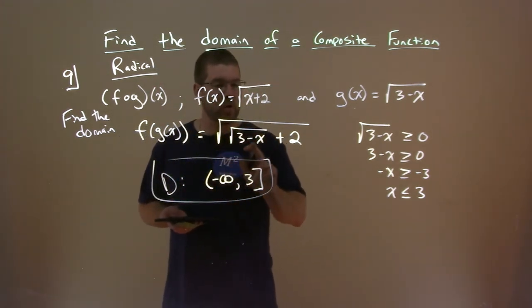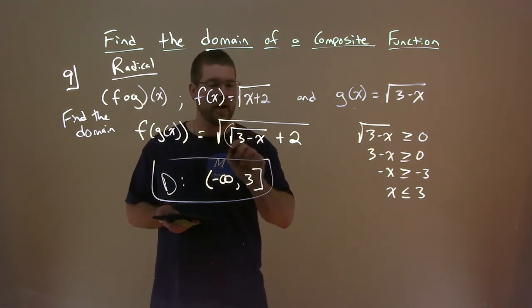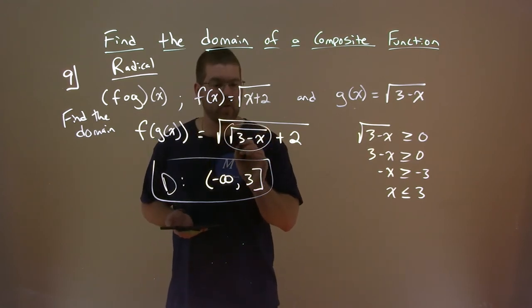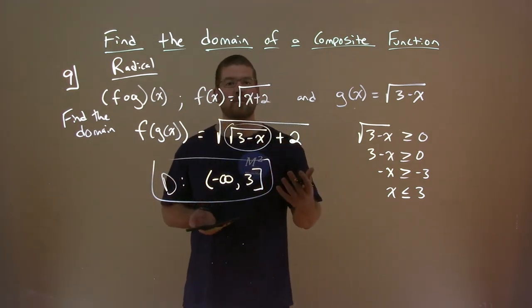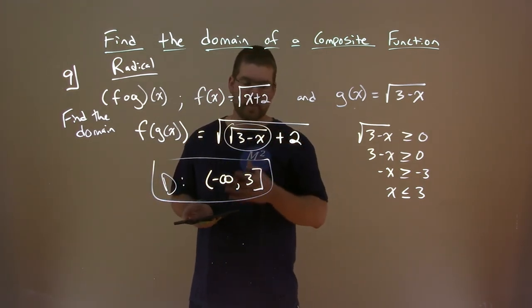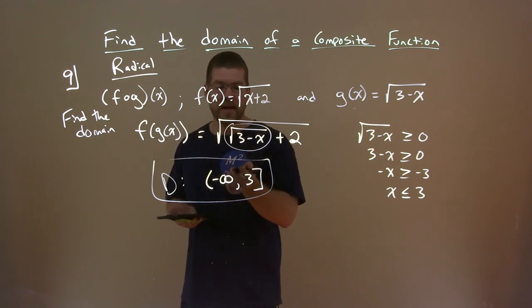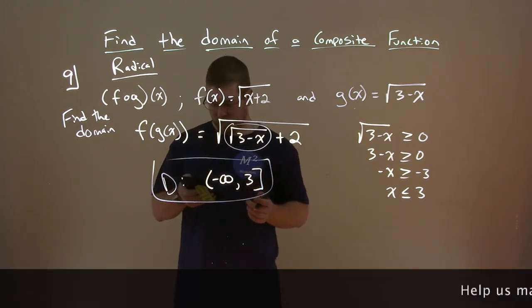And that is our domain of this whole composite function. Again, that makes this whole thing right here become positive, or 0. And a positive or 0 plus a positive number will always be positive and we're good. And so our final domain is just negative infinity to 3 including 3.